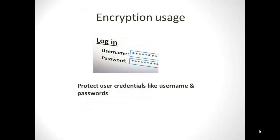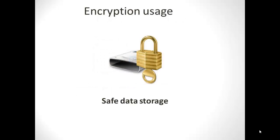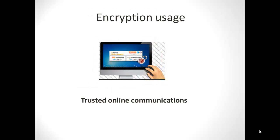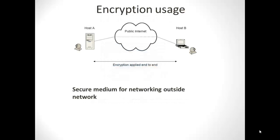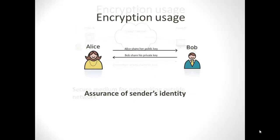Now let's look at some uses of encryption. The biggest use is encrypting user credentials like usernames and passwords. It also enables safe data storage, trusted online communication like banking transactions, secure networking over external networks like virtual private networks (VPNs), and it assures the sender's identity because only authorized users have access to the data.